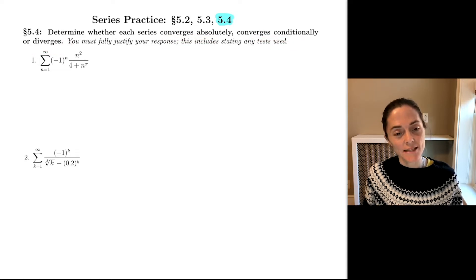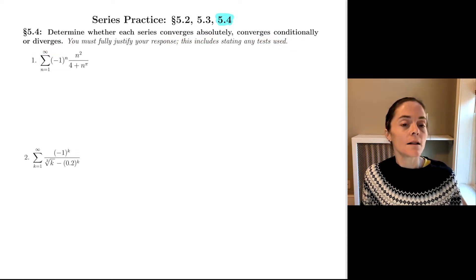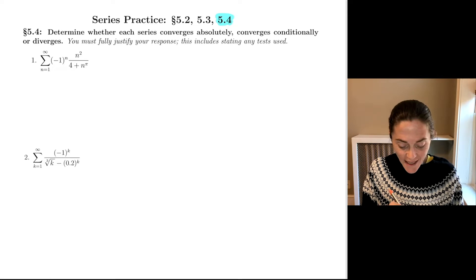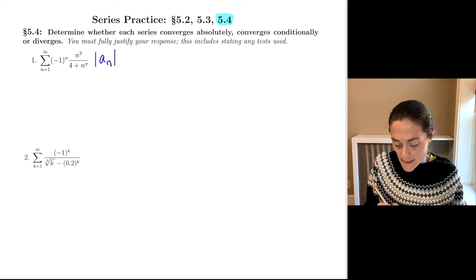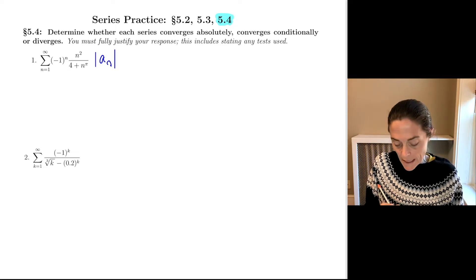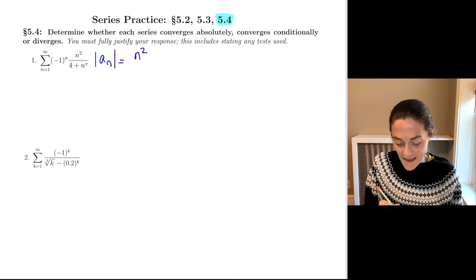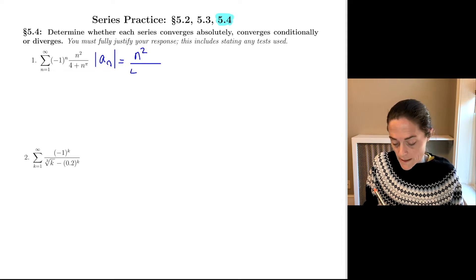What's my strategy on these types of series? Well, typically, let's start with number one: we begin by looking at the absolute value of a_n. In this case, this series is alternating, and the absolute value of a_n is n squared divided by four plus n to the pi.